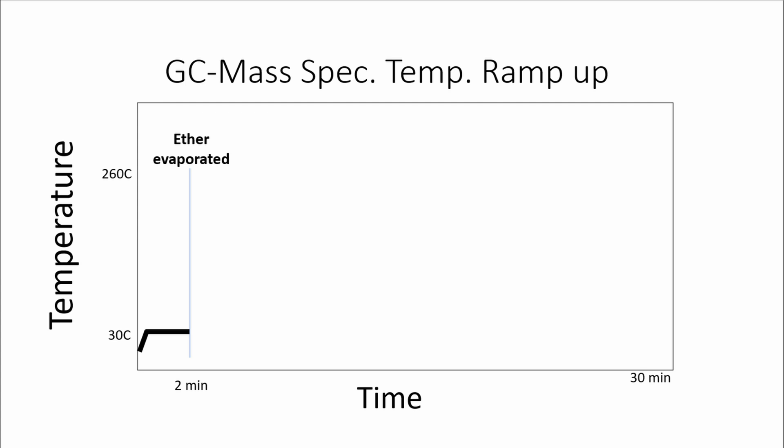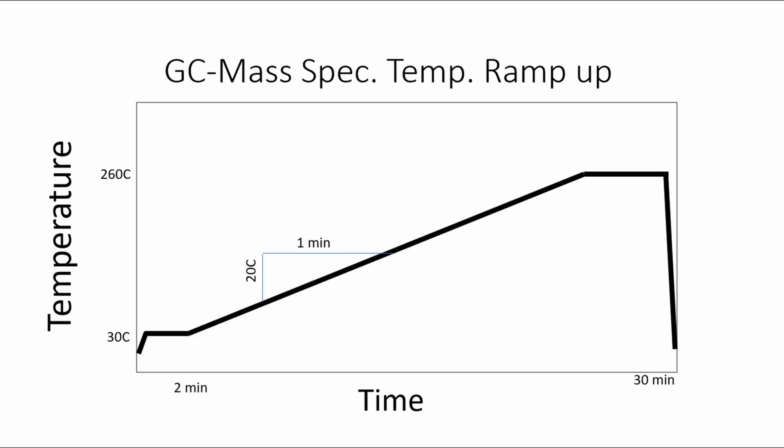If we start collecting data, all that ether will hit the detector, leading it to degrading faster, and may even break it. Then we ramp up the temperature to around 250 degrees Celsius, a climb rate of 20 degrees Celsius per minute. Between these two temperatures, the compounds that we produced in the distillate should elute from the column. Each sample takes approximately 30 minutes to run.